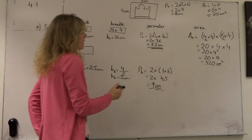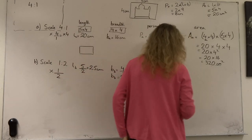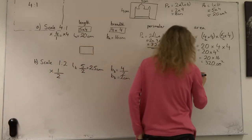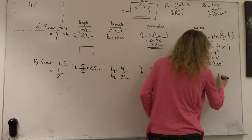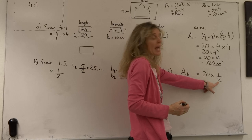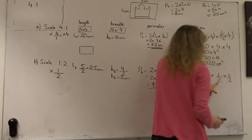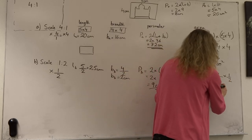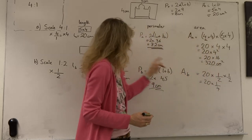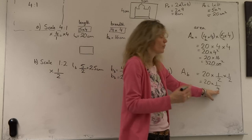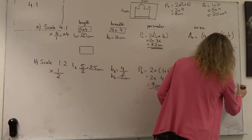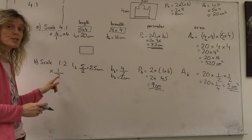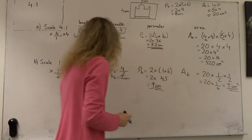What would we expect when it comes to area? The area of the new sketch — I would expect it to be the original area of 20, multiplied by the scale factor applied to the length (a half) and then to the breadth (a half). A half times a half is a quarter. So I would expect the area of the new picture to be 20 times a quarter, which is 20 divided by 4, giving 5 centimetres squared.